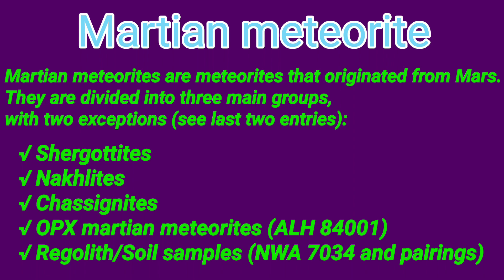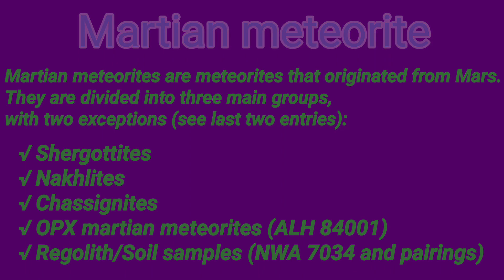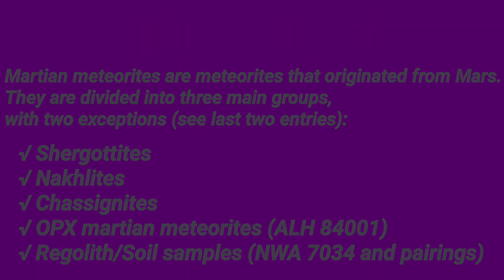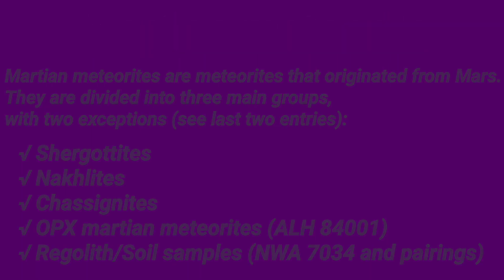Martian meteorites are divided into three main groups, with two exceptions: Shergottites, Nakhlites, Chassignites, OPX Martian meteorites, and Regolith soil samples.